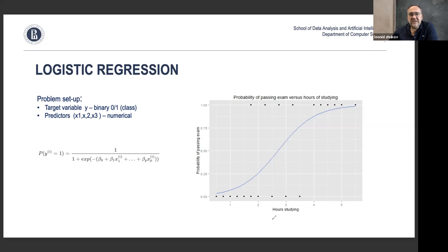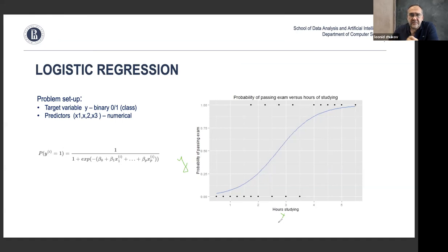We touched on logistic regression a couple of lectures ago — just to remind you, it's quite straightforward. Let's say we have a one-dimensional problem where x is your input variable and y is what we want to predict. We want to calculate the probability of passing an exam as a function of the number of hours a student studies.